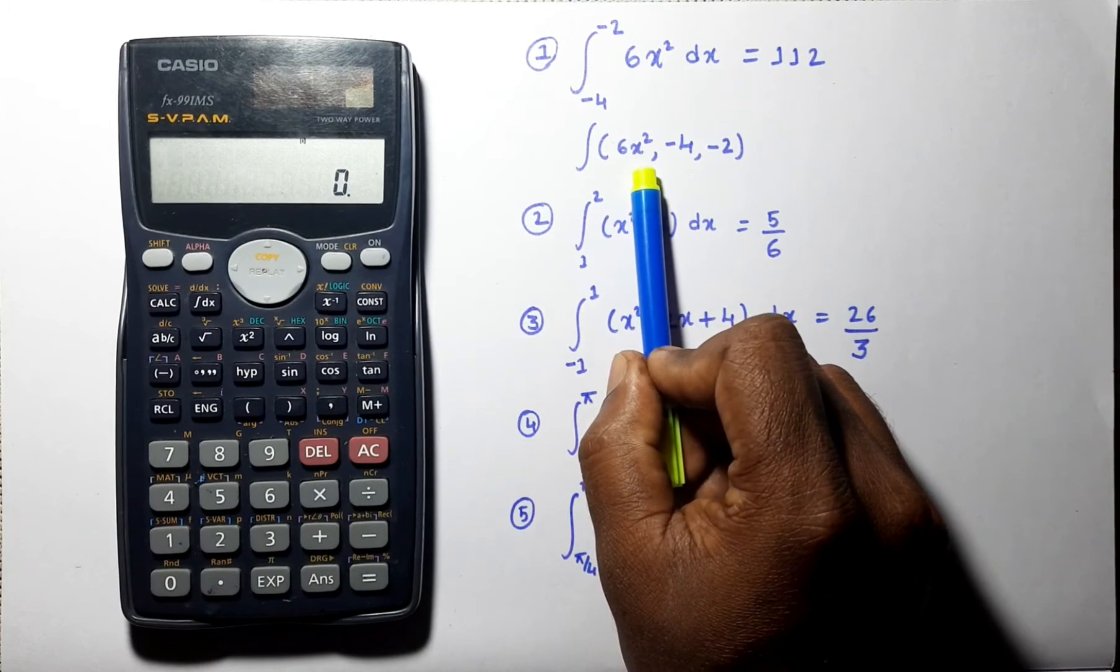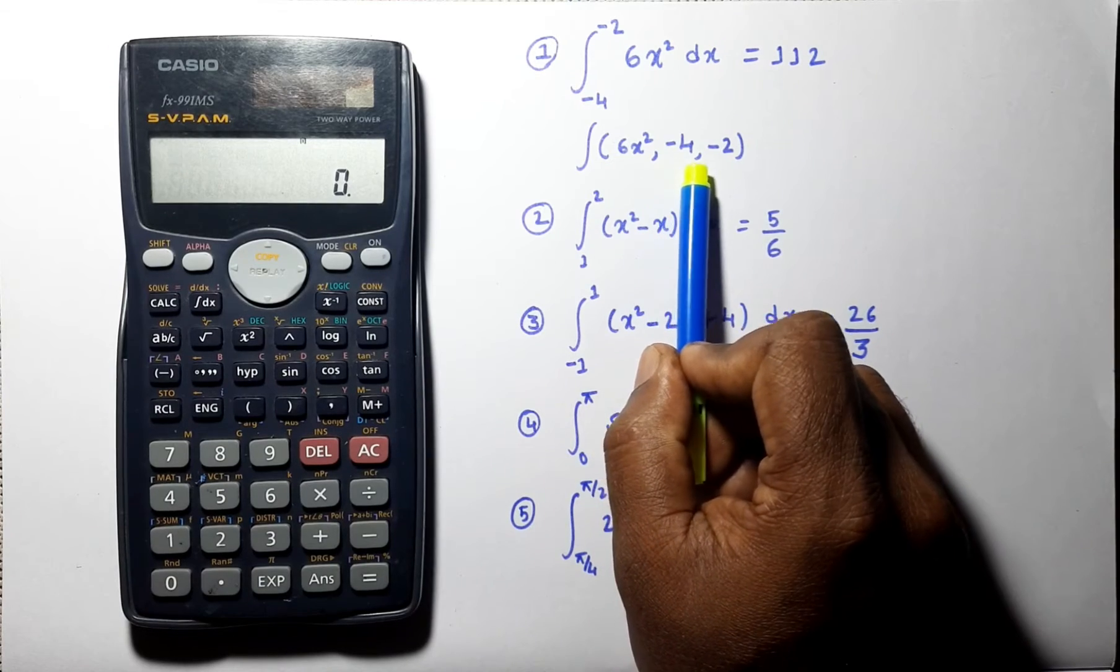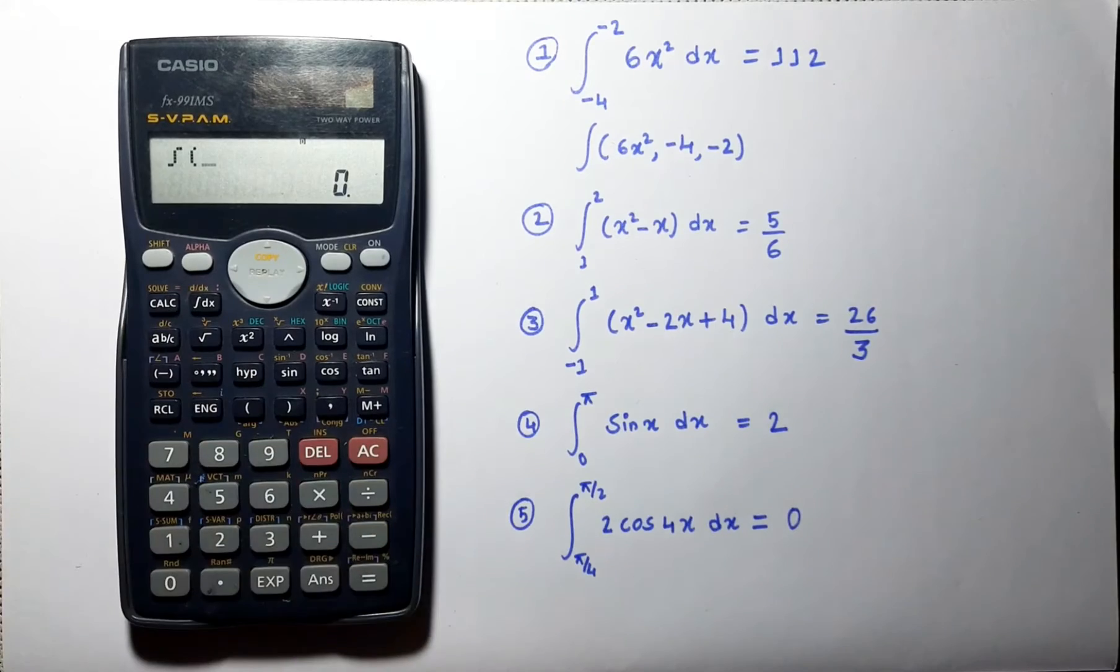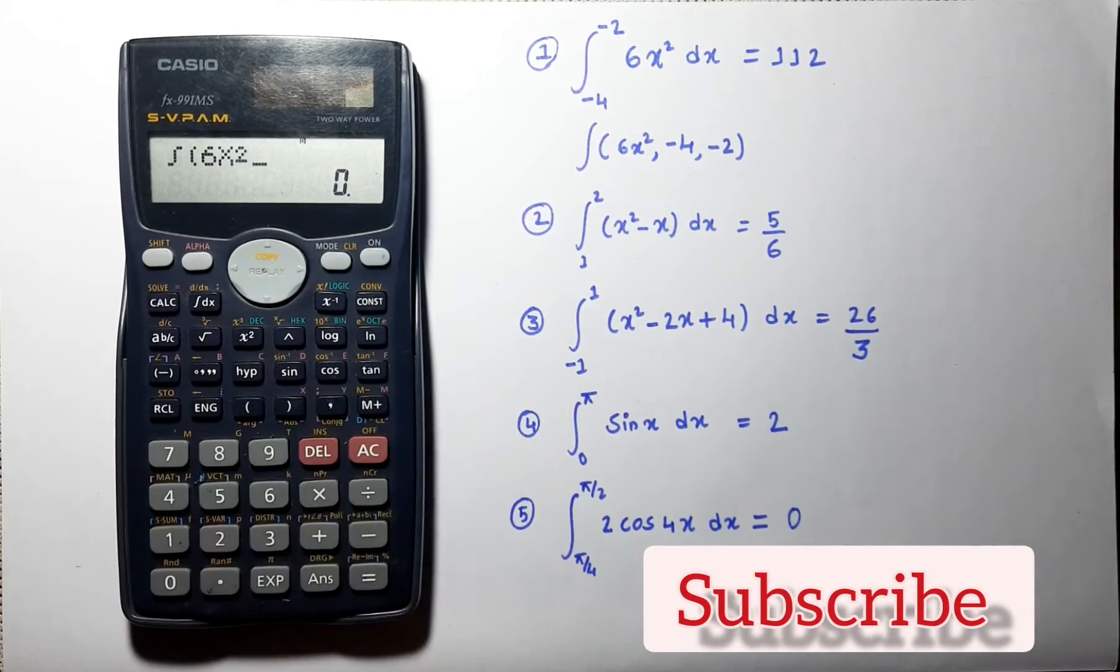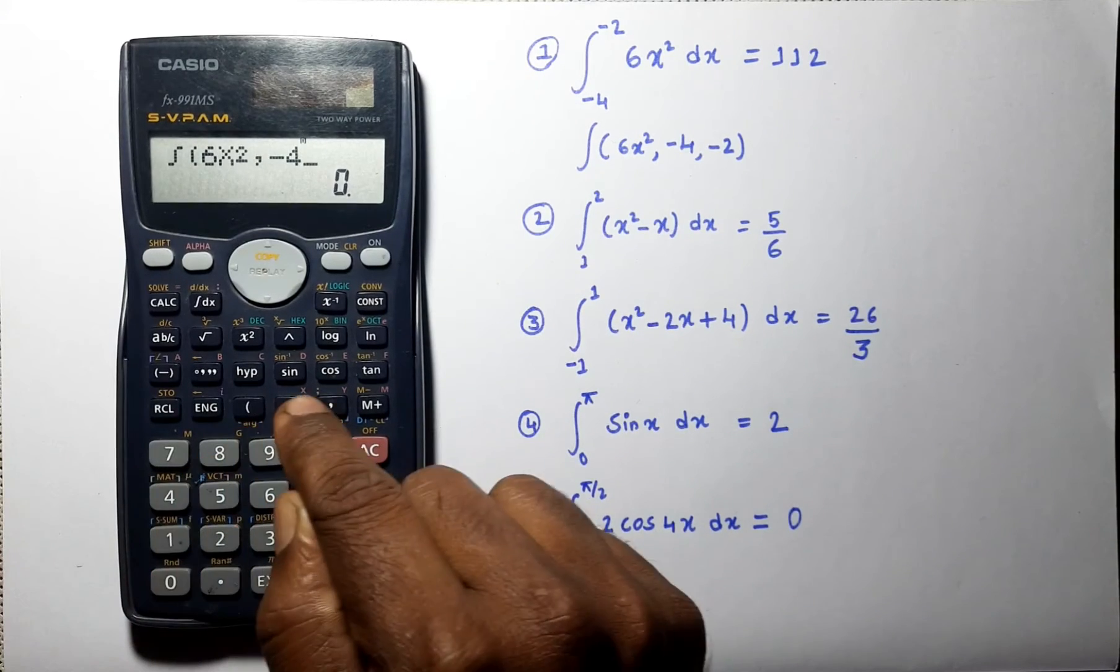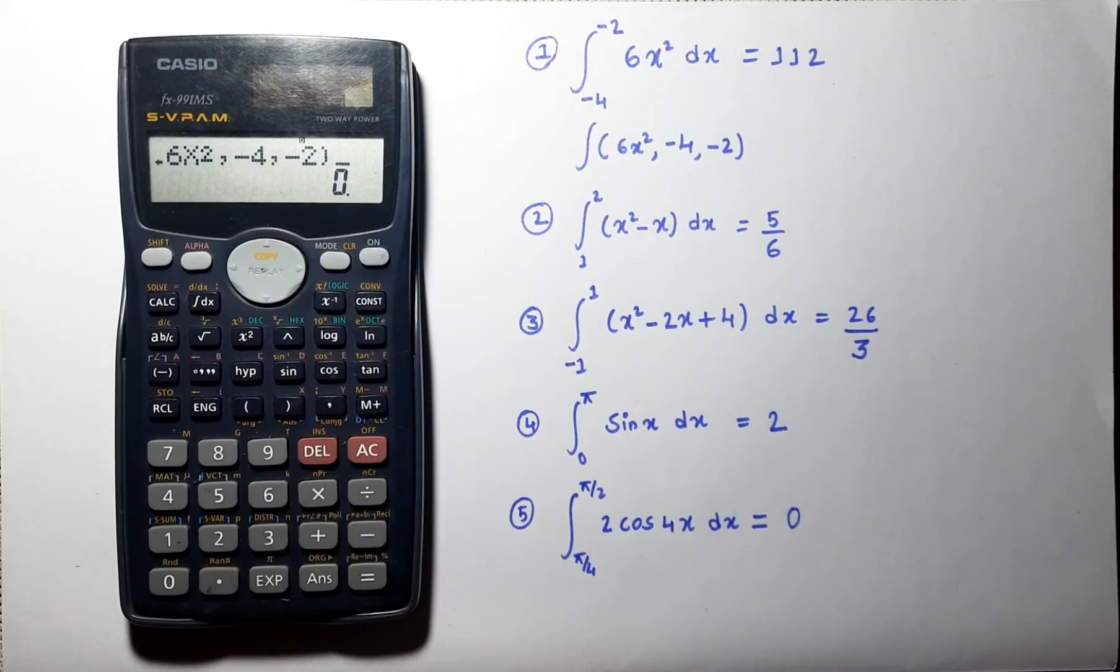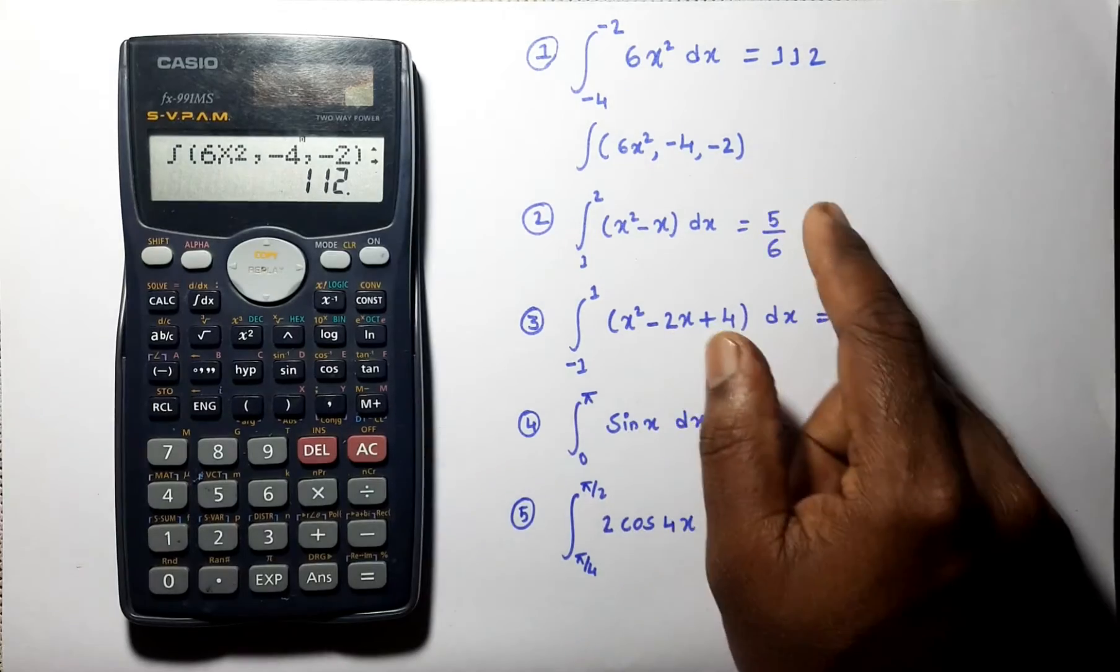First, we have to write this in this form. Integral of 6x square, comma, minus 4, comma, minus 2. 6x square, comma, minus 4, comma, minus 2. Close the bracket. And we can check this answer here.